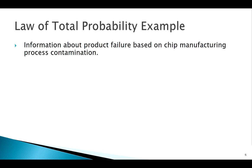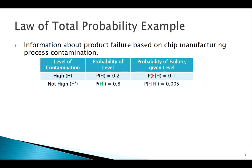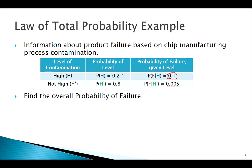We have information about a manufacturing process for some sort of computer chip. The chips could go through manufacturing and get contaminated. We're only worried about whether they have high contamination or not. Given a high level of contamination, the probability of failure in quality review is about 10%, otherwise it's very low. 20% of chips are highly contaminated, 80% are not.